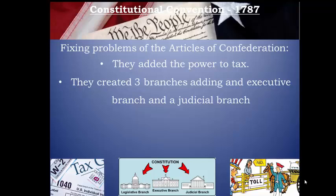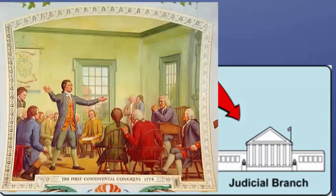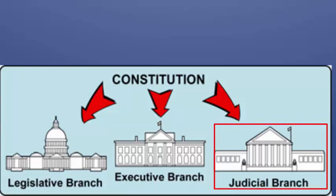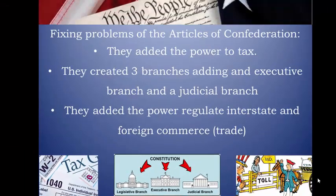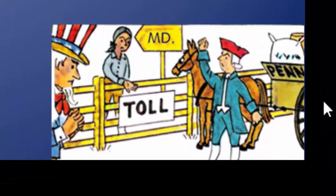Next, they created the three branches, adding the executive and the judicial. Remember, they had a legislative branch under the Articles — the Continental Congress — but since they had no one to enforce the law, which is what the executive branch does, and no one to interpret or judge the law, which is the judicial branch, they added these two new branches. Next, they established a commerce clause. Commerce is trade, and this gave the central government the power to regulate foreign and interstate trade, which had been a big problem under the Articles — states were taxing other states and making deals with other countries.